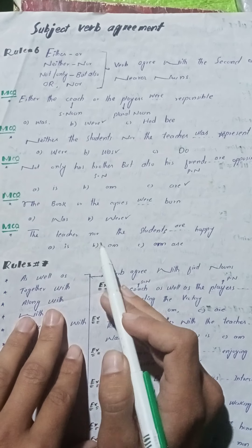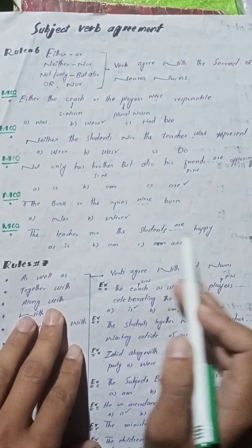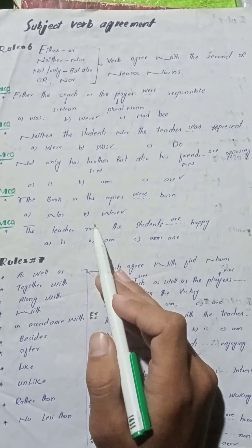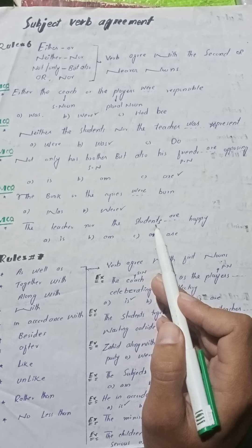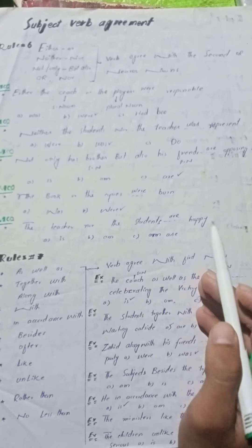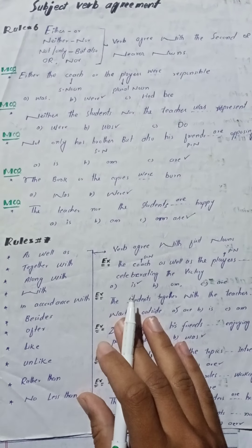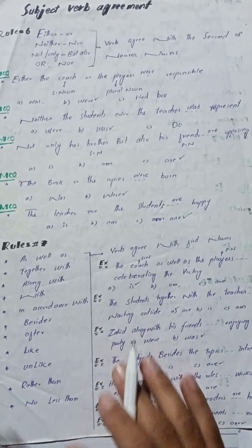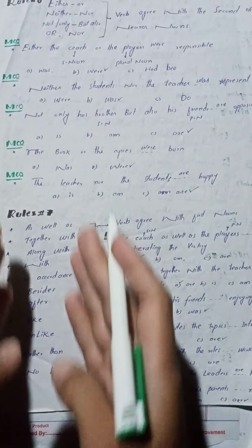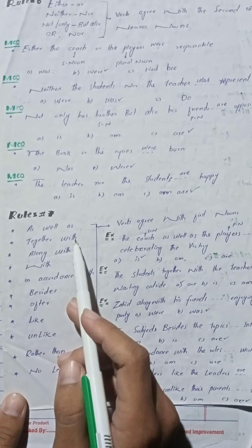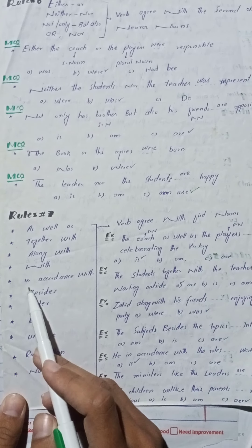MCQ number five: 'The teacher nor the students ___ happy.' یہاں 'nor' آیا ہے۔ Second noun 'students' plural ہے تو verb بھی plural ہوگی۔ Right option: option C (are). اب ہم rule number seven discuss کرتے ہیں۔